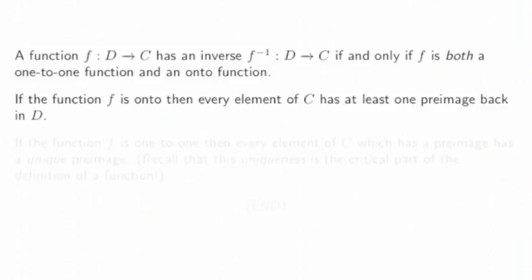If the function f is onto, then every element of the codomain C has at least one preimage back in D. That's what onto means.